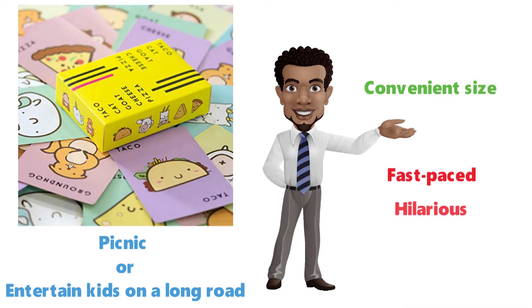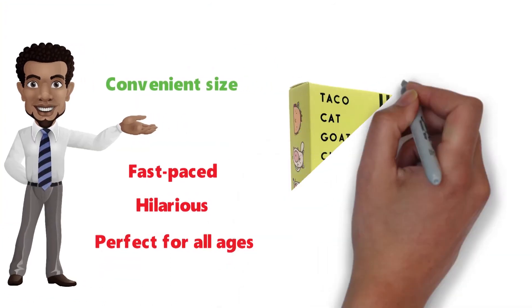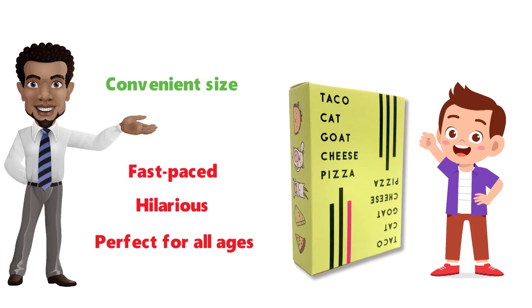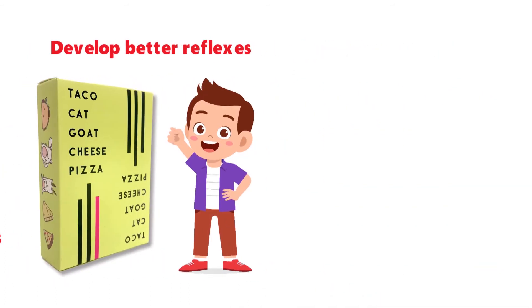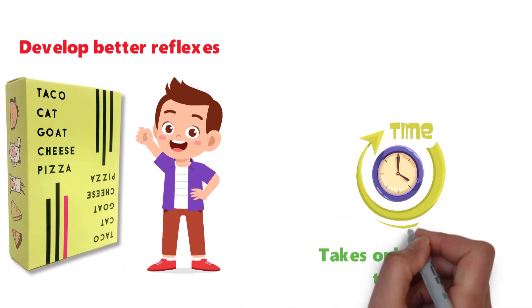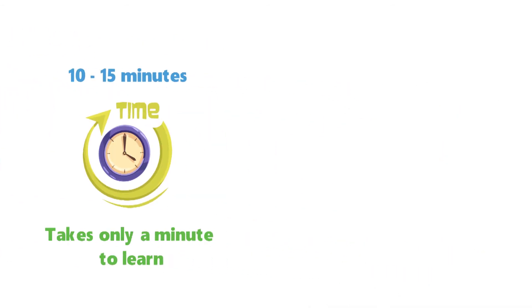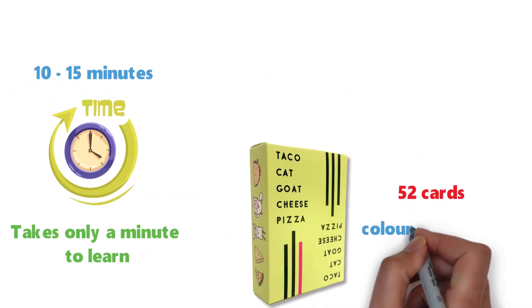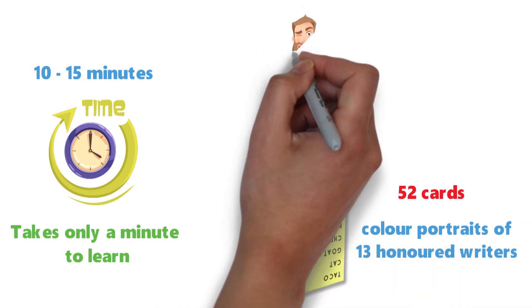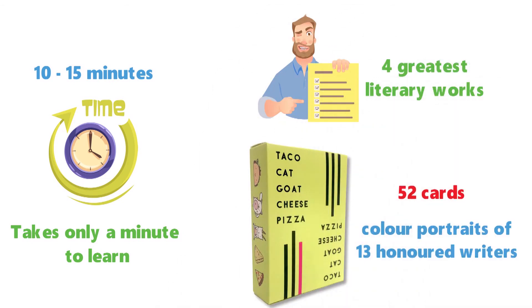It's fast-paced, hilarious and perfect for all ages. The concept of the game also helps kids develop better reflexes. It takes only a minute to learn and each gameplay lasts for 10 to 15 minutes on average. The box contains 52 cards featuring color portraits of 13 honored writers with lists of their 4 greatest literary works.